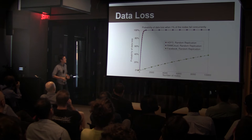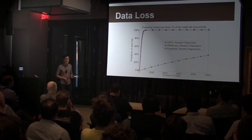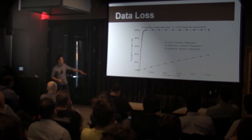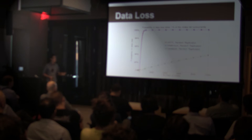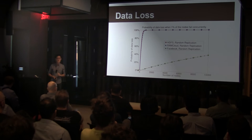This comes from the copy sets paper — they simulated various replication strategies. HDFS is random. RAMCloud is random. Facebook is a peculiar kind of random. On the x-axis is number of nodes; on the y-axis, if 1% of the nodes fail, what's the probability that you lose data? It very quickly shoots up to 100%. The more data you throw onto your system, the more likely you are to lose data if you have node failures.